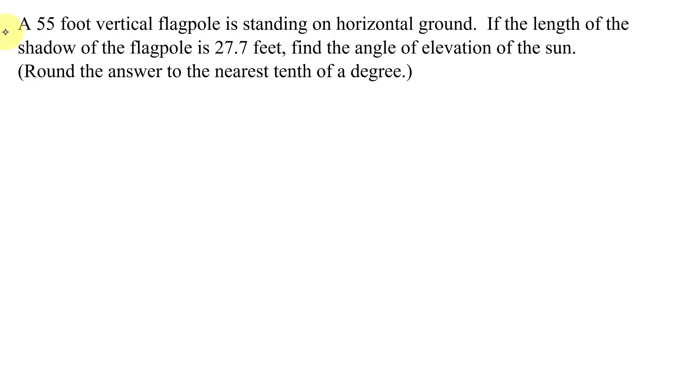This application problem states a 55-foot vertical flagpole is standing on horizontal ground. If the length of the shadow of the flagpole is 27.7 feet, find the angle of elevation of the sun. I need to round the answer to the nearest tenth of a degree.